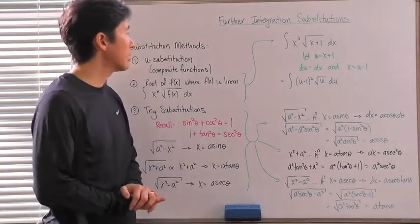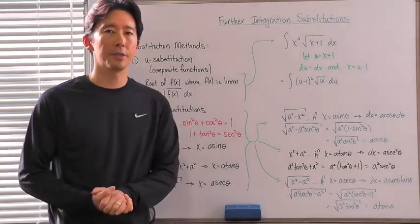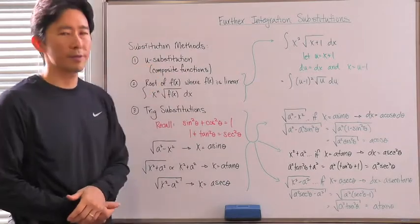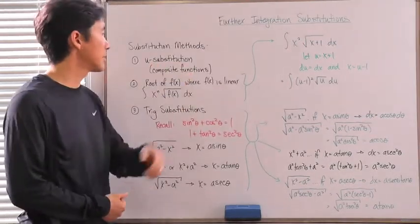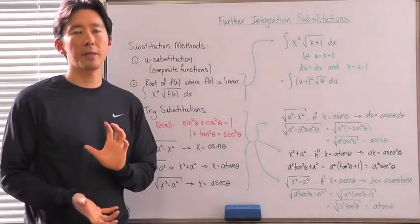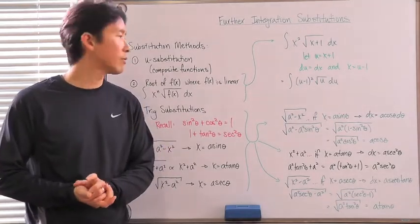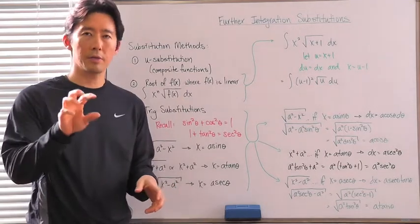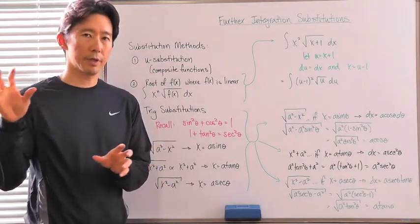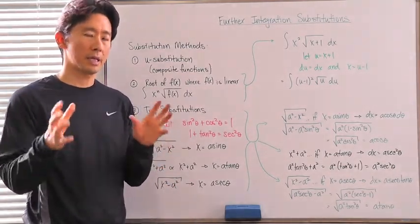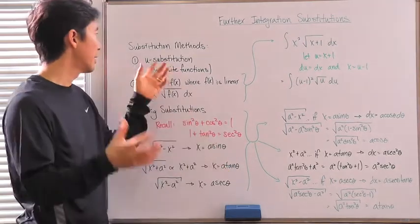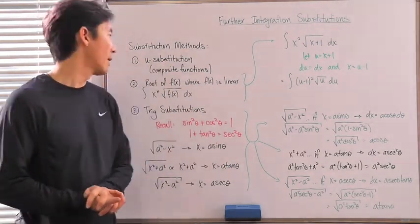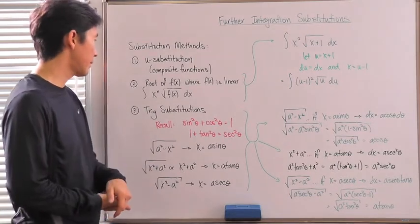Let's take a look at further integration substitutions. There's one substitution method that everybody's familiar with, and that's the u-substitution. We said that was going to be the inverse process of the chain rule, so when we have a composite function where the derivative of whatever you substitute in for u is actually a part of the integral itself, then we can use that u-substitution method to integrate.